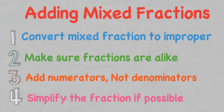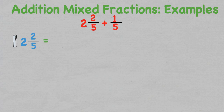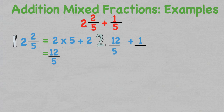Now that we have an understanding of the terminology and how to convert a mixed fraction into an improper fraction, we can look at some examples. If we have two and two over five plus one over five, we need to change the mixed fraction into an improper fraction first: two multiplied by the denominator five, and add the numerator two.